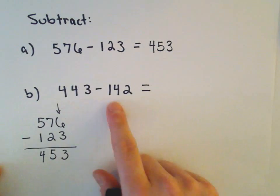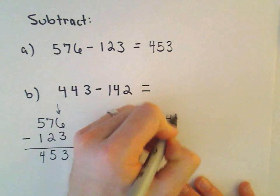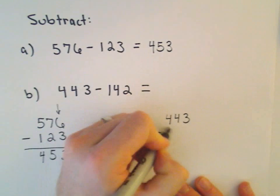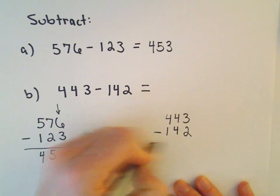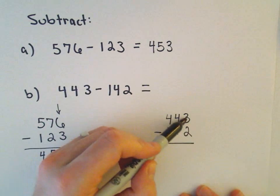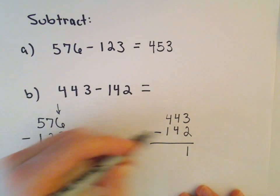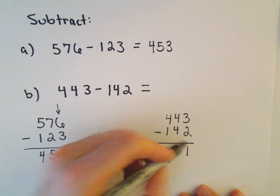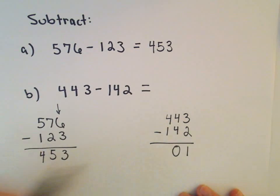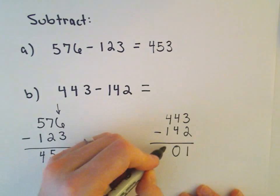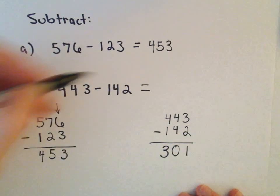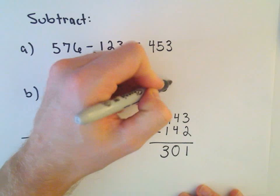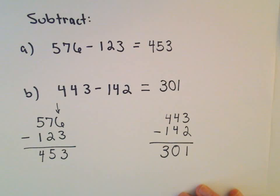Okay, so let's do the next example as well. So 443, somebody takes away 142, let's see: 3 minus 2 is just 1, 4 minus 4 will leave you with 0, and 4 minus 1 will give us 3. So 443 minus 142 is going to equal 301.